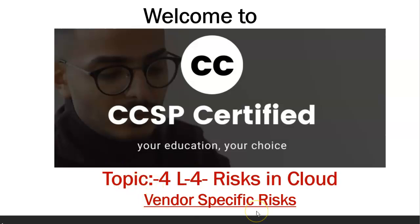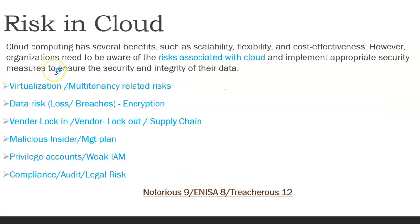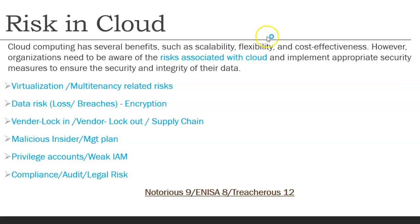Vendor-specific risk is very important from an exam perspective — you can expect around four questions from this small topic in the CCSP exam. In Topic 4, Lectures 1 and 2, we covered virtualization and multi-tenancy related risks. In Lecture 3 we covered data and encryption-related risks. Today we will see vendor-specific risks: vendor locking, vendor lockout, and supply chain.